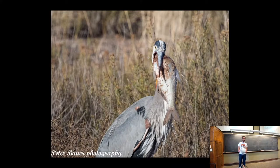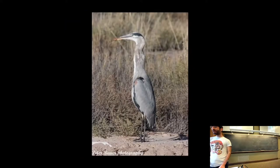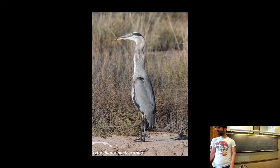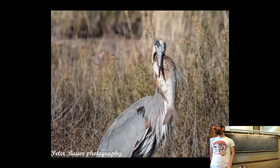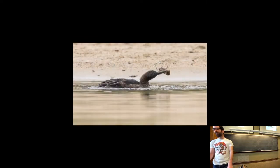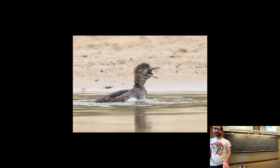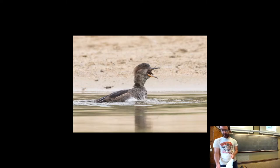Welcome everyone. We have some feasting birds to start today — a great blue heron enjoying a big fish and just swallowing that thing whole, digesting all the scales, bones, organs, and eyes. And here we have a female hooded merganser doing battle with a crawfish it would very much like to eat. The crawfish does not want to be eaten, but the merganser wins and swallows the thing whole — shell, pinchers, everything. That's a strong stomach on that duck.